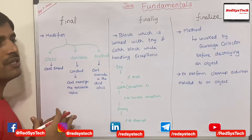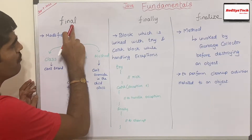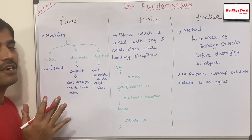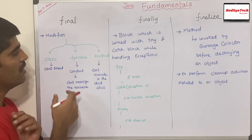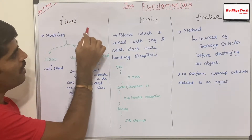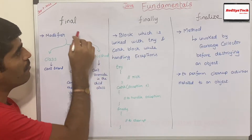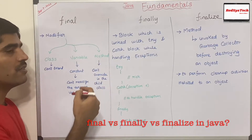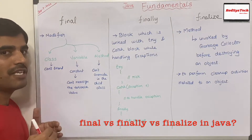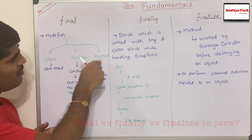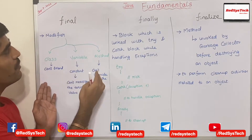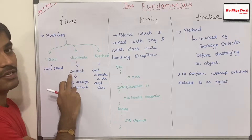Because it is a final class, no one can extend it. Similarly, if you apply the final keyword to a variable, you are making that variable a constant, meaning no one can reassign the value for that variable. And if you apply the final keyword to a method, then in your child class you cannot override it. So if you have a parent class and a child class extending it, and one method is marked as final, you cannot override that method in the child class.